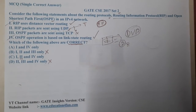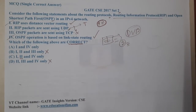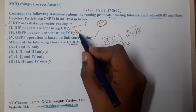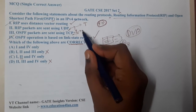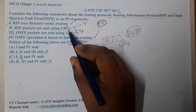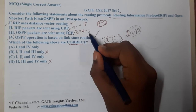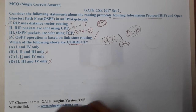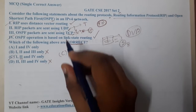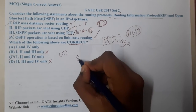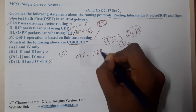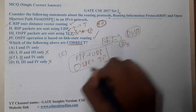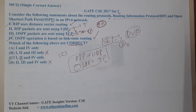Moving to statement III — OSPF packets are sent via TCP — this is false. OSPF packets are not sent by TCP nor by UDP. They are sent directly using the IP protocol, meaning only an IP header is used. There is no transport layer protocol involved in sending OSPF packets.